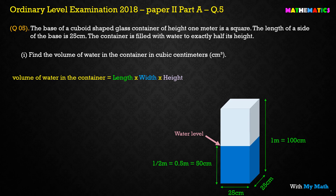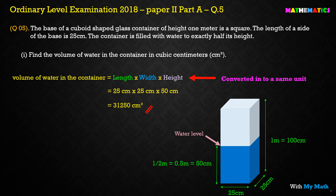The formula is length × width × height. An important fact: all dimensions must be converted to the same unit — in this case, centimeters. So we have 25 × 25 for length and width, and 50 centimeters for height, not 100 centimeters, because we only fill up to the water level. Therefore the answer is 31,250 cubic centimeters.